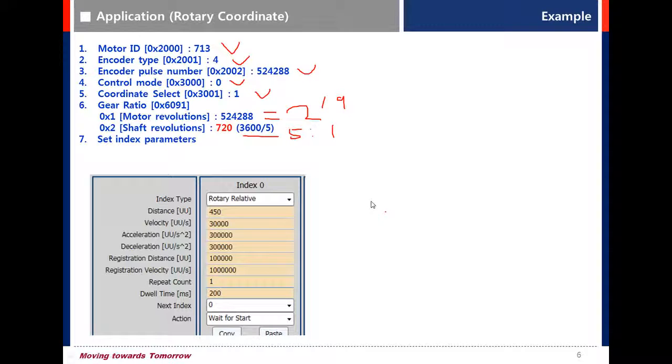Let's see the index parameters. For index 0, set the index type as rotary relative. Distance is 450 because it is moved to 45 degrees. Set velocity as 30,000.